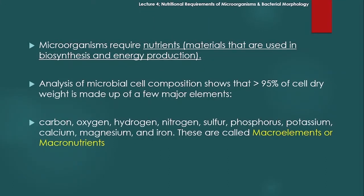یعنی microbial cell کی composition کا اگر analysis کی جائے تو research کہتی ہے کہ more than 95% cell dry weight چند elements سے بنا ہے۔ چند عناصر سے بنا ہے۔ اور ان چند major elements کو ہم macro elements یا macro nutrients کہتے ہیں۔ ان میں کاربن، آکسیجن، ہائیڈروجن، نائٹروجن، سلفر، فاسفورس، پوٹاشیم، کیلشیم، میگنیشیم اور آئرن شامل ہیں۔ ان کو ہم کہتے ہیں macro elements یا macro nutrients۔